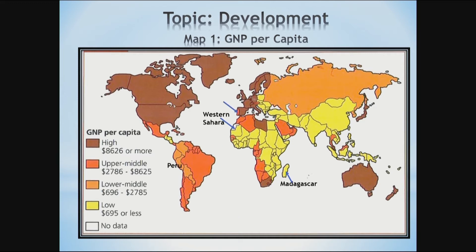An example for the upper-to-middle category is Portugal, which is in Europe. And finally, the last category is high GNP per capita at $8,626 or more — an example being Australia. As an activity at home, can you name two other countries from each category? Remember also to mention their continent.